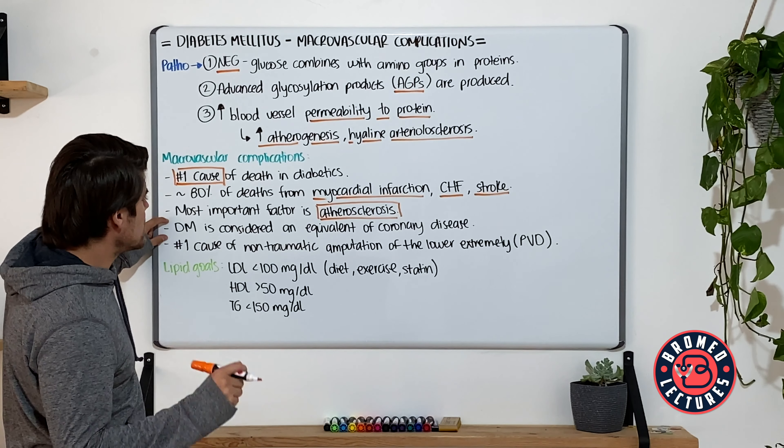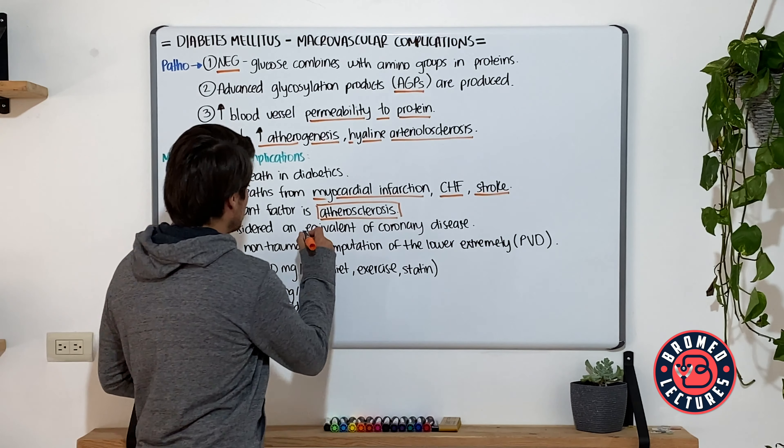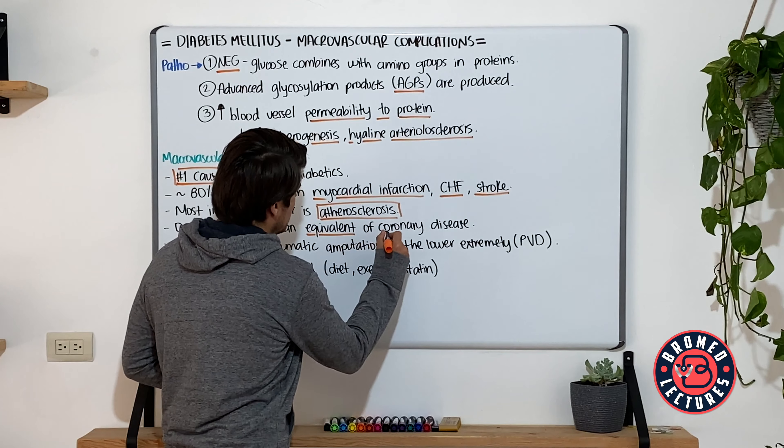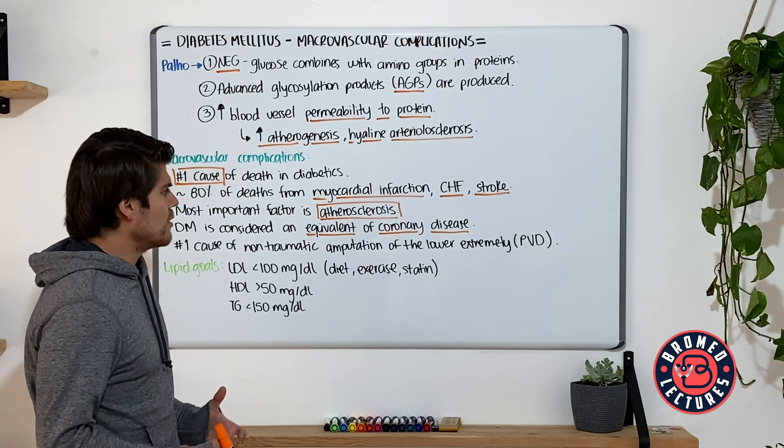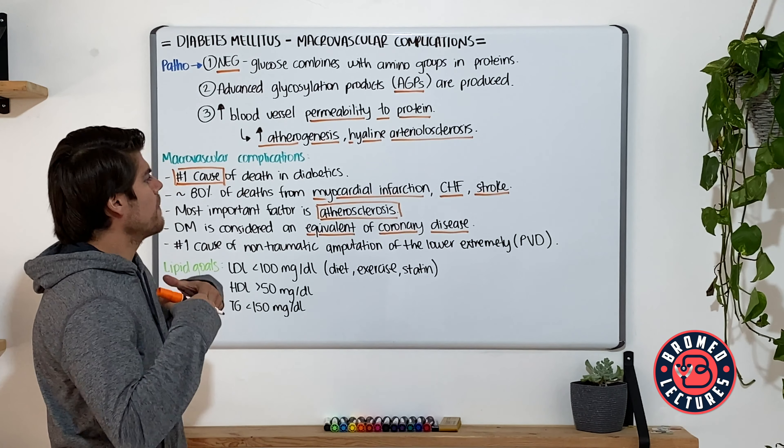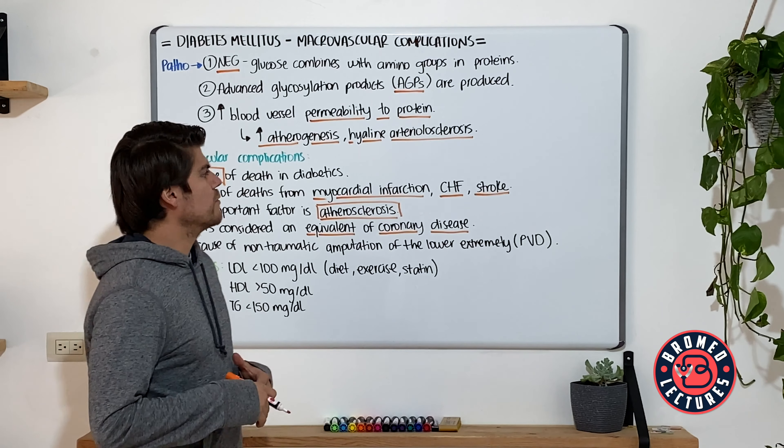And now the most important factor for this is going to be the atherosclerosis development in these patients. Always when you're asked, remember that these diabetic mellitus patients are considered to have an equivalent of coronary artery disease.